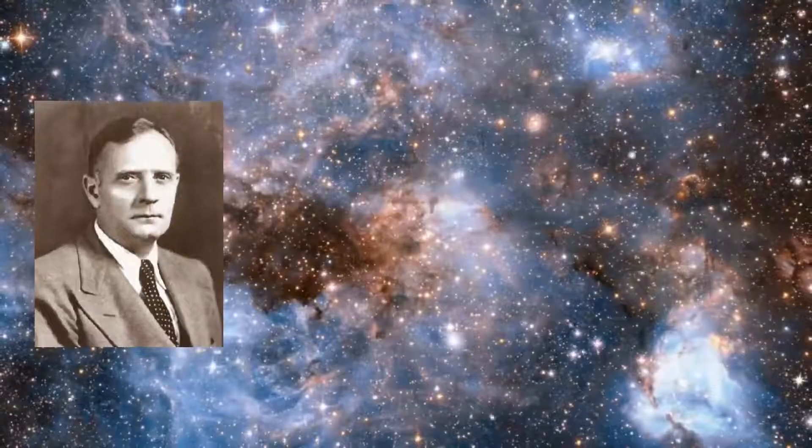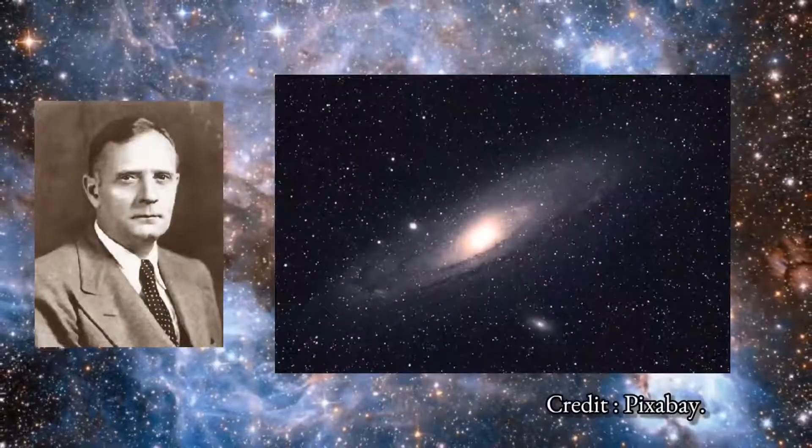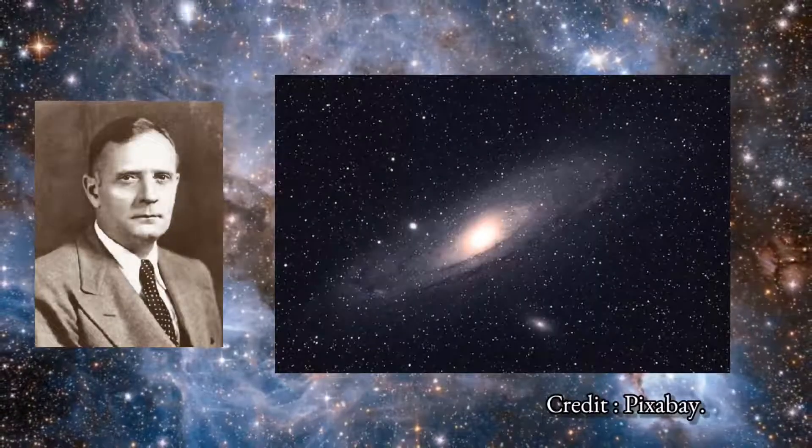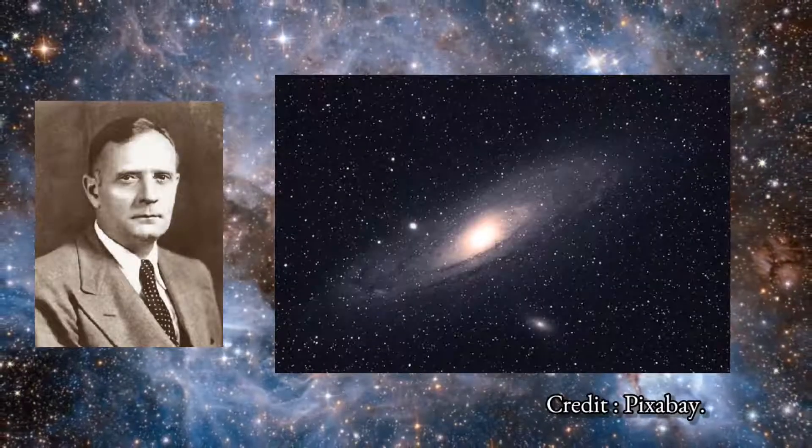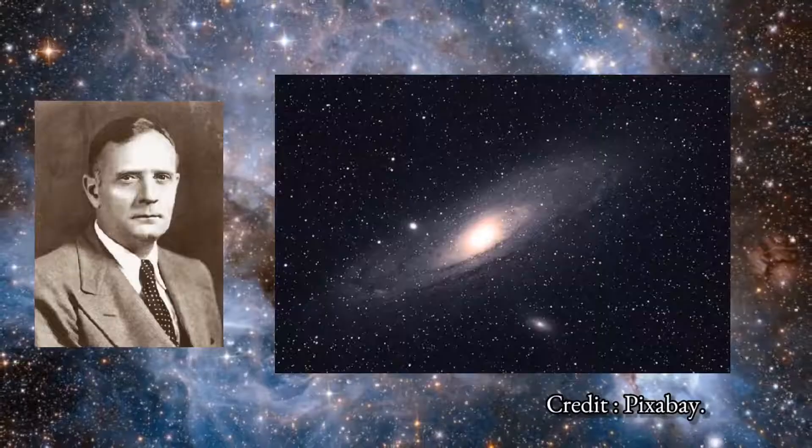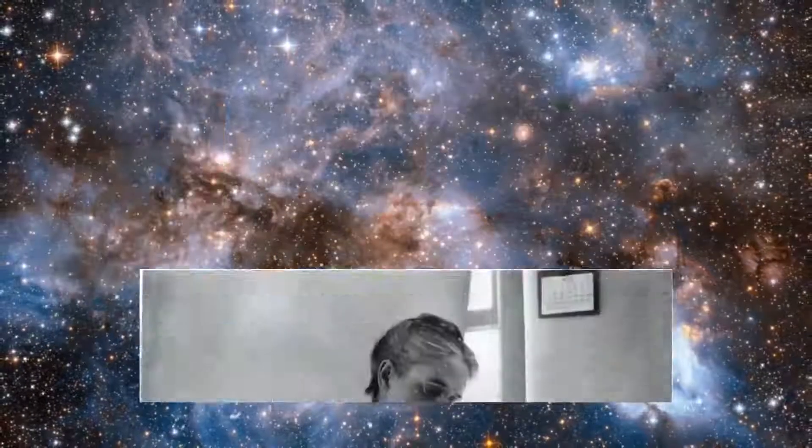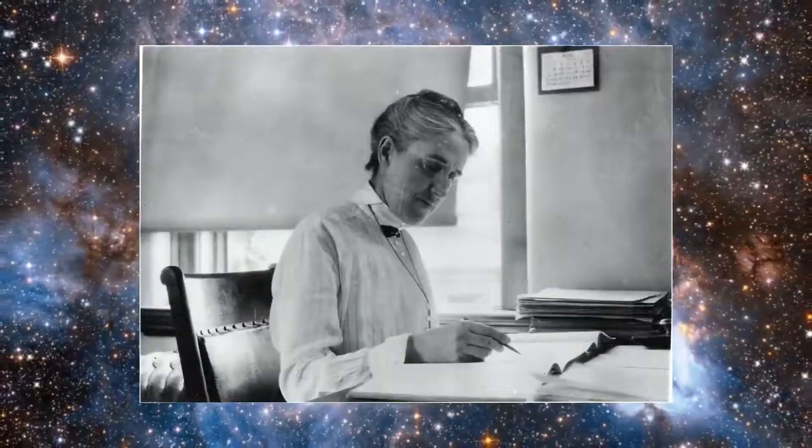In 1923, Hubble was studying the Andromeda Nebula, now called the Andromeda Galaxy, when he realized that one of the objects he was observing was in fact a Cepheid variable star. Cepheids are stars whose brightness changes periodically over time, and they had been discovered by the American astronomer Henrietta Leavitt in the early 1900s.